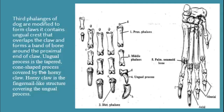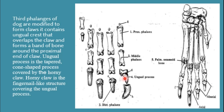Now let's discuss the anatomy of the third phalanx of dog. Third phalanges are modified to form a claw. Each claw is a fingernail-like structure covering a cone-shaped tapered process known as the ungual process. Just proximal to this ungual process there is an ungual crest that overlaps the claw and forms a band of bone around the proximal end of the claw.